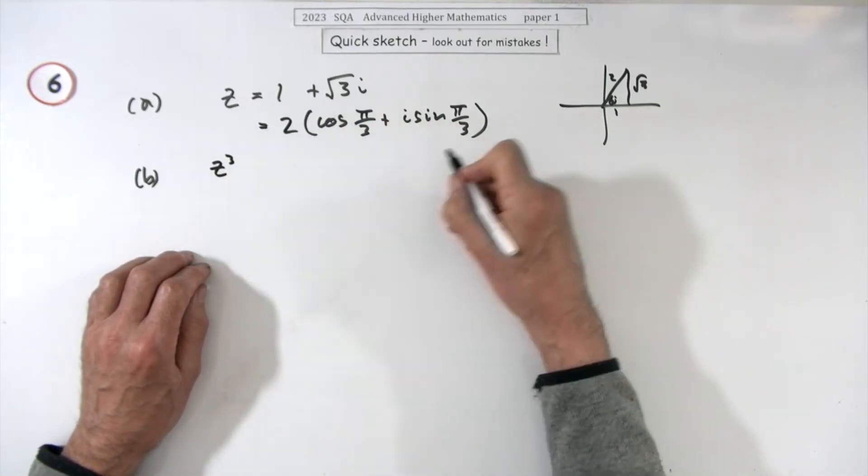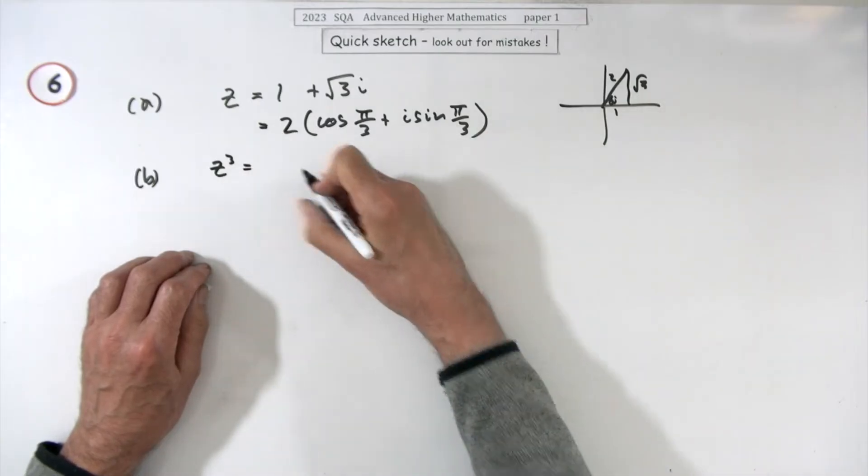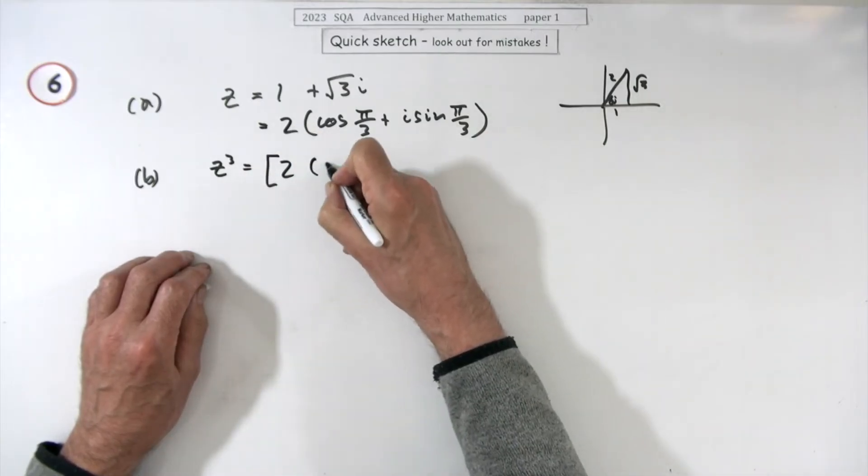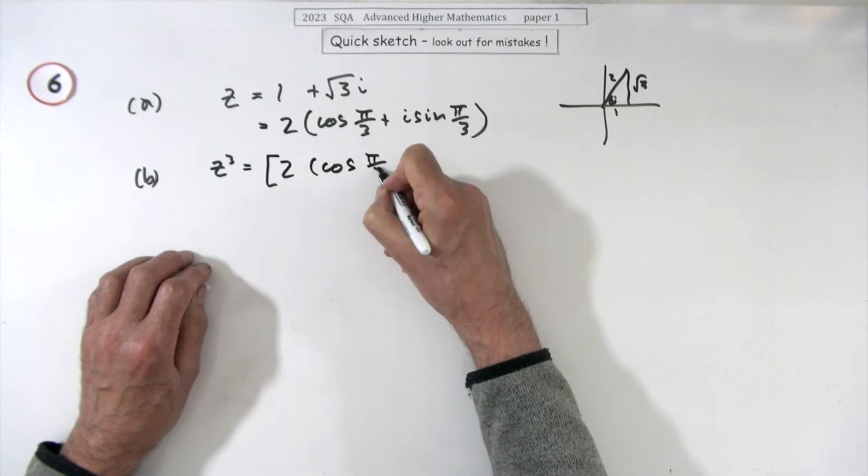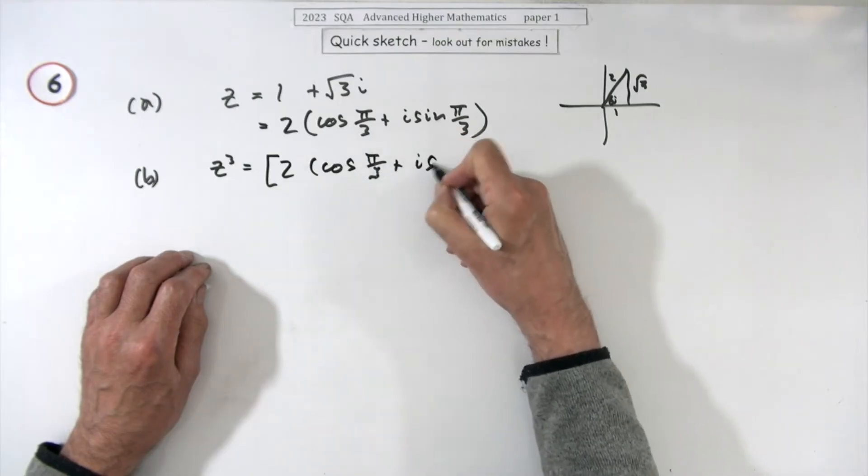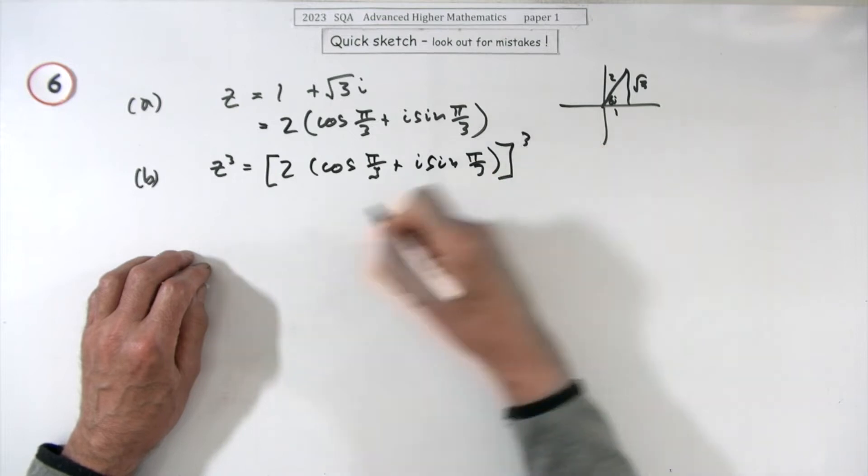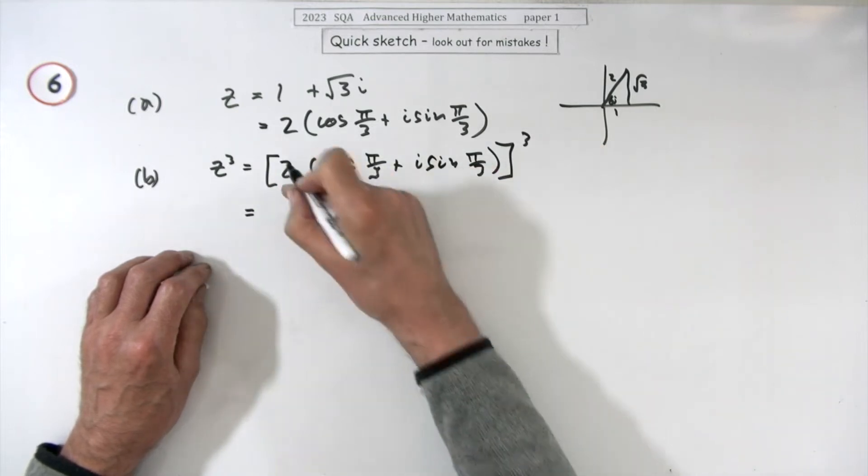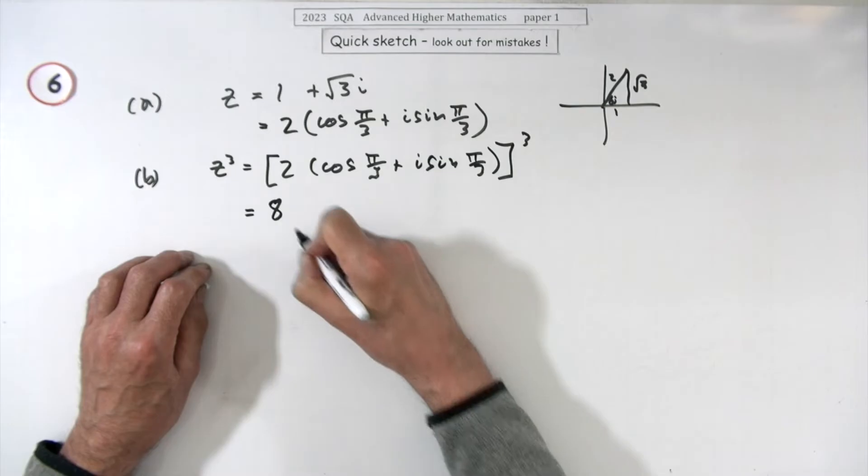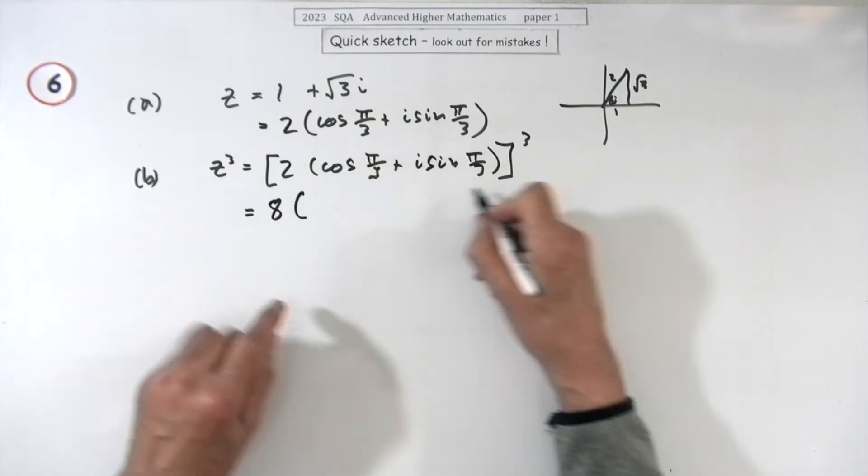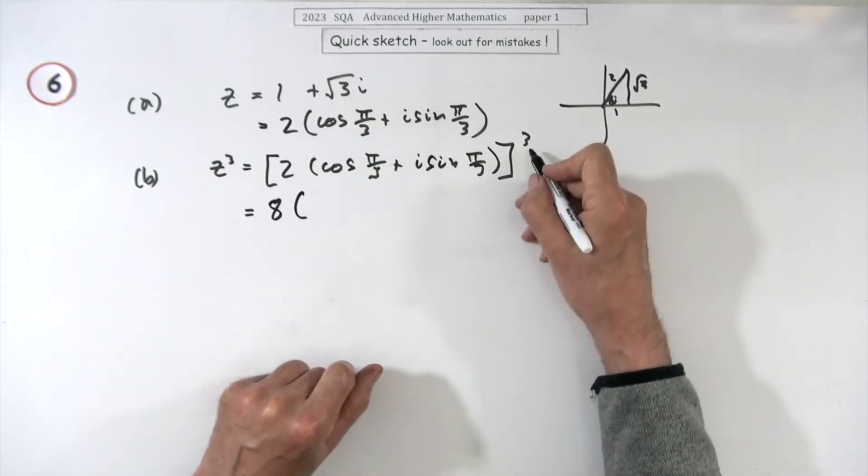Because that simply means I'm going to take that number two, cos π upon three plus i sine π upon three, and cube it. And cubing it means cube both parts, so cube the two, that's easy, that's eight. And then de Moivre's theorem: when you cube this part of it, it becomes three times the argument.